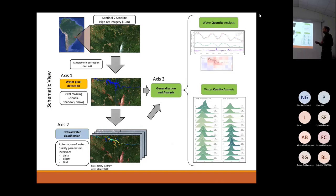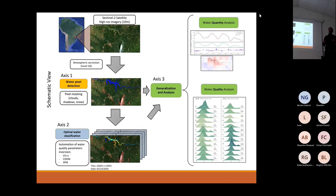Axis one covers water pixel detection, along with other tasks to mask undesired pixels in the scene. Axis two covers optical water classification, which was motivated to improve inversion algorithms because of the difficulty of having one algorithm calibrated for different regions and different water types.